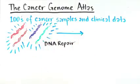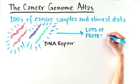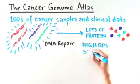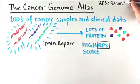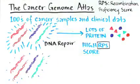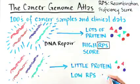The activity of these four genes determines how much protein is produced. When lots of protein is produced from these four genes, the sample is said to have a high RPS score, or recombination proficiency score. When little protein is produced, it has a low RPS score.